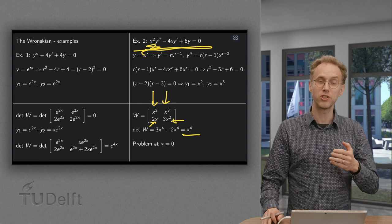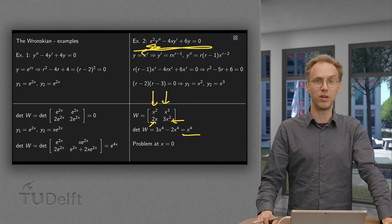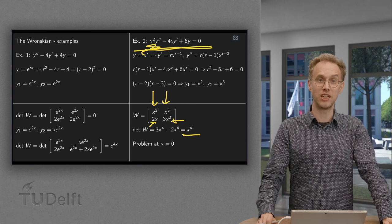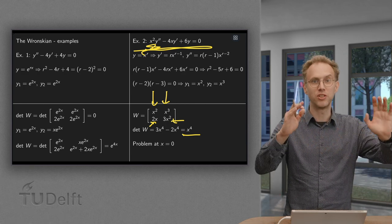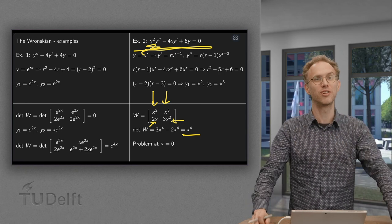So here your Wronskian x⁴ signals a problem at x = 0 and you can also see it from your ODE which also has a problem in x = 0. But as long as you stay away from x = 0, you have two independent solutions and you have your general solution.